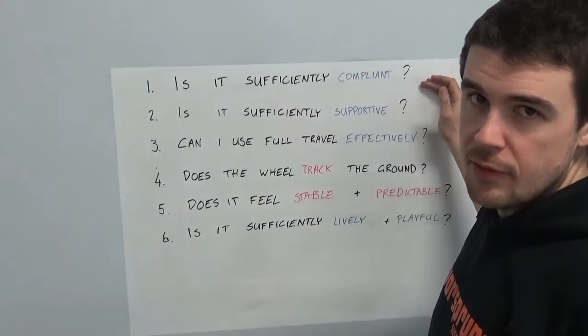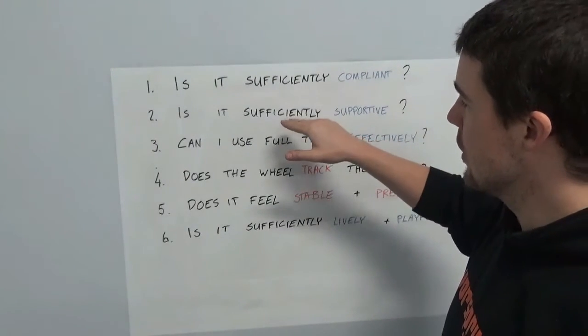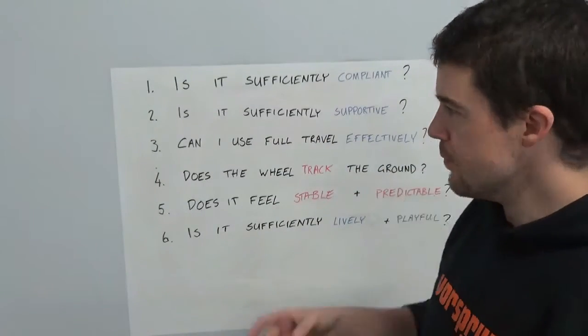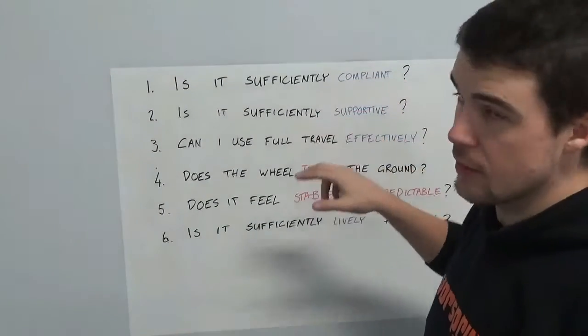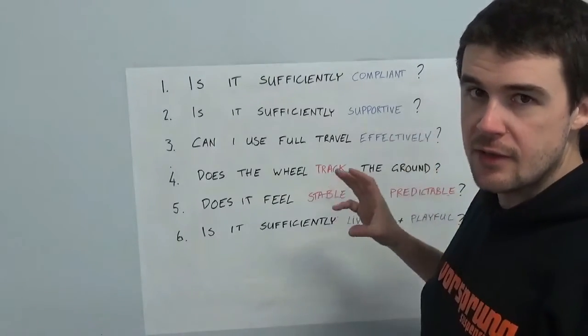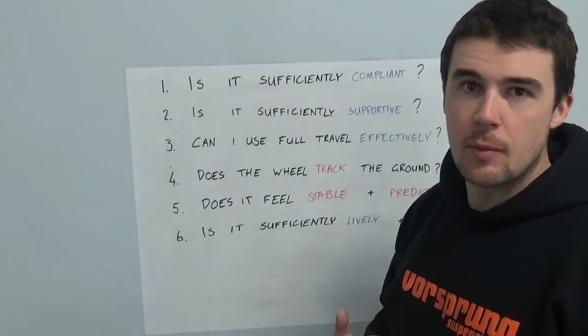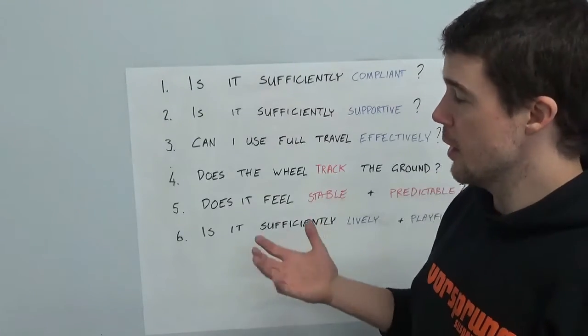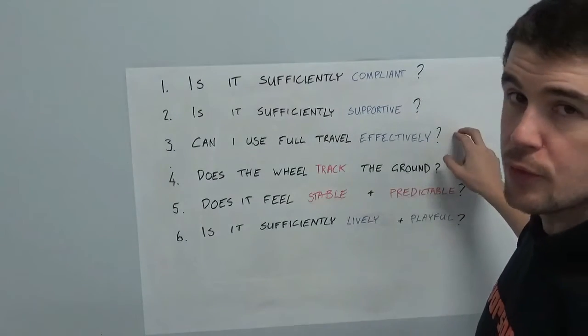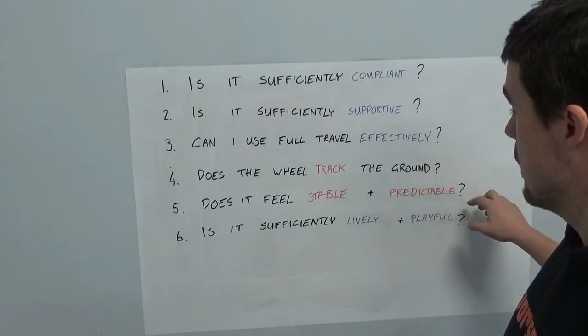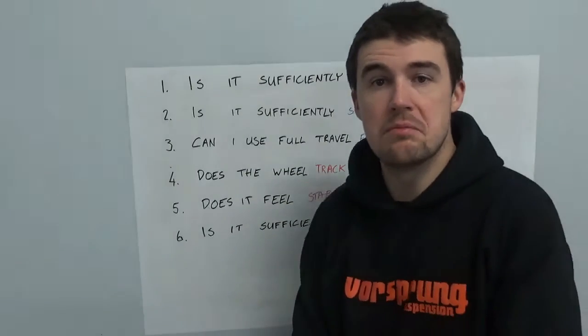So getting the best compliance typically involves running a soft setup, relatively light damping and so forth. However, getting something that is very supportive is usually a much firmer setup. So for example, you may well find that in order to get the compliance that you want, getting the support that you want is difficult and vice versa. So basically, if you can answer yes to these six questions, honestly, then your suspension is set up better for you than most people's is. And that puts you in a pretty good position. If you have sufficient compliance, sufficient support, you're able to use full travel when necessary, if the wheel is following the ground well, it feels stable and predictable and not to such an extent that you're losing the liveliness or playfulness, then you have a very good setup.